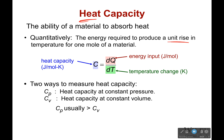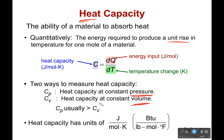There are two ways to measure heat capacity: one is at constant pressure, and one is at constant volume. Usually the constant pressure one is a little bit more than the constant volume one. This is what you usually see in equations, though sometimes you'll see Cv. For us, don't worry about that too much. And here are our units.